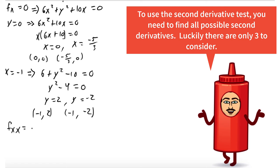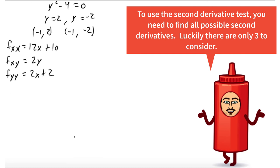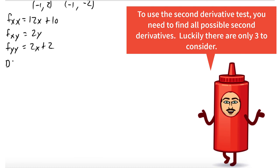Now we want to do the second derivative test. So we're going to need each of the second derivatives. Here's fxx = 12x + 10. fxy = 2y. And fyy works out to be 2x + 2. And the last thing we need is the function D, which we call D(x,y), which is just fxx times fyy minus fxy². So (12x + 10)(2x + 2) - (2y)². And this will tell us if we have a max, min, or saddle point.